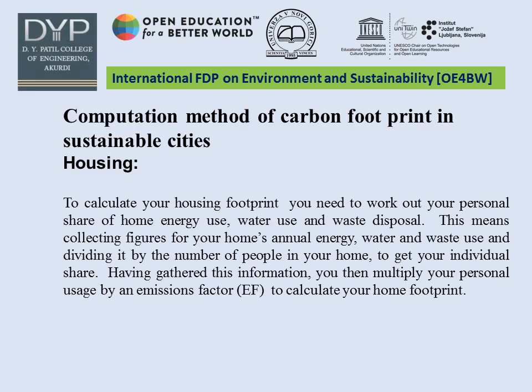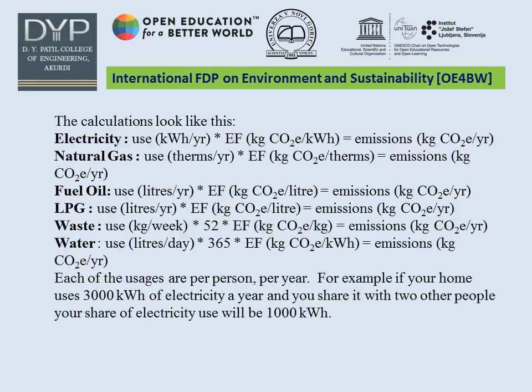Now we will see how to calculate the carbon footprint in sustainable cities. Taking the example of housing: to calculate the housing footprint, we need to determine our personal share of home energy use, water use, and waste disposal. This involves collecting annual energy, water, and waste data from the home and dividing by the number of people to get individual shares. The personal usage is then multiplied by an emission factor to calculate your own footprint.